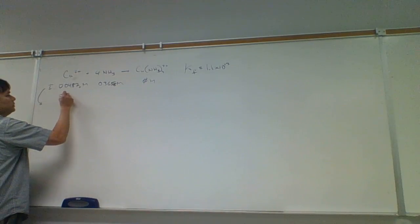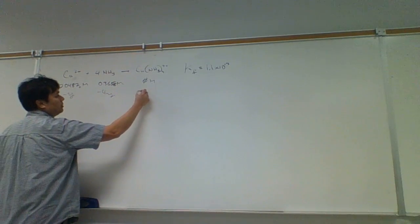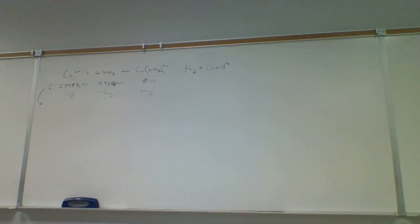And so what we'll do is we'll do minus Y, minus four Y, plus Y. So we're just going to reset it to the right. We have to figure out which is the limiting reagent. Is it the copper or is it the ammonia? Copper ion or ammonia?